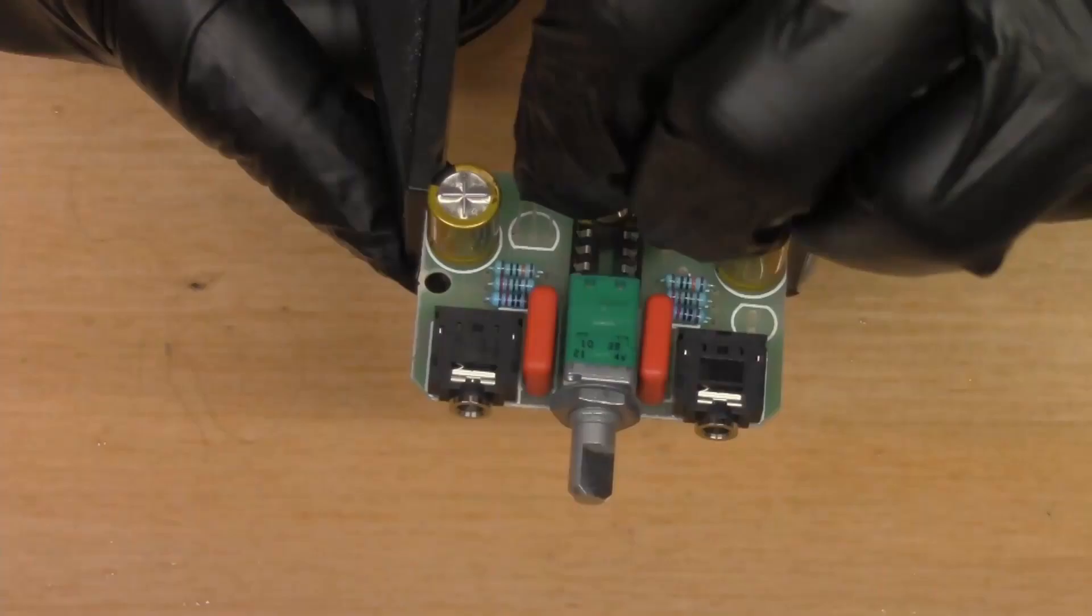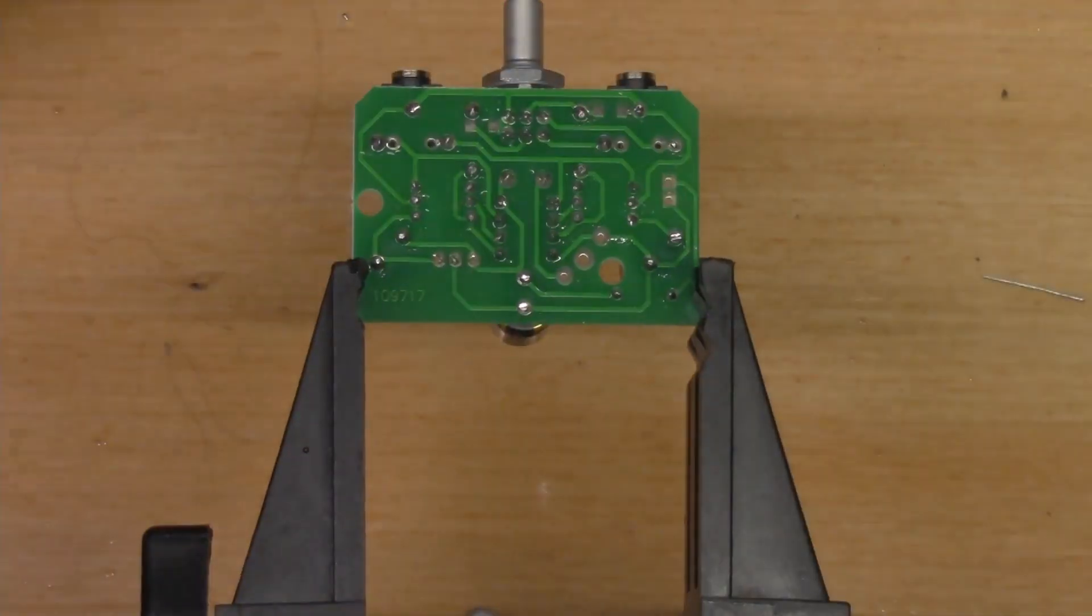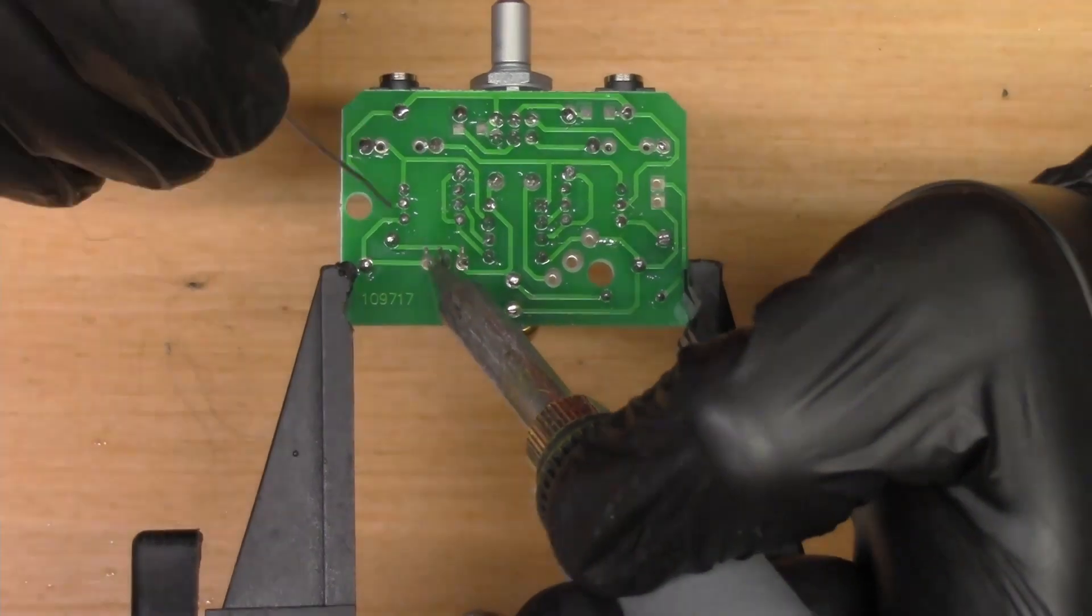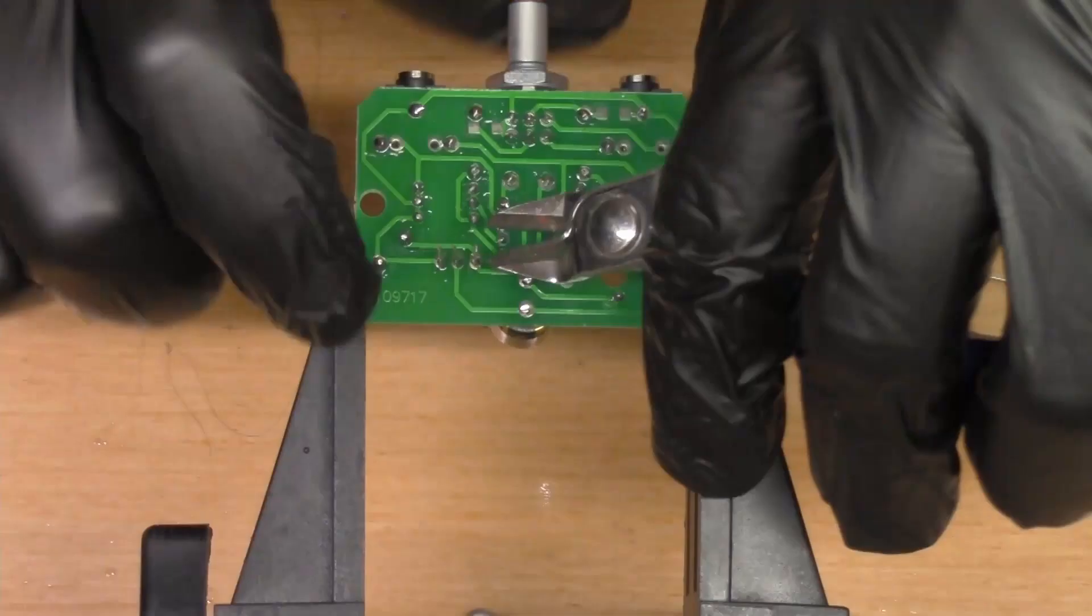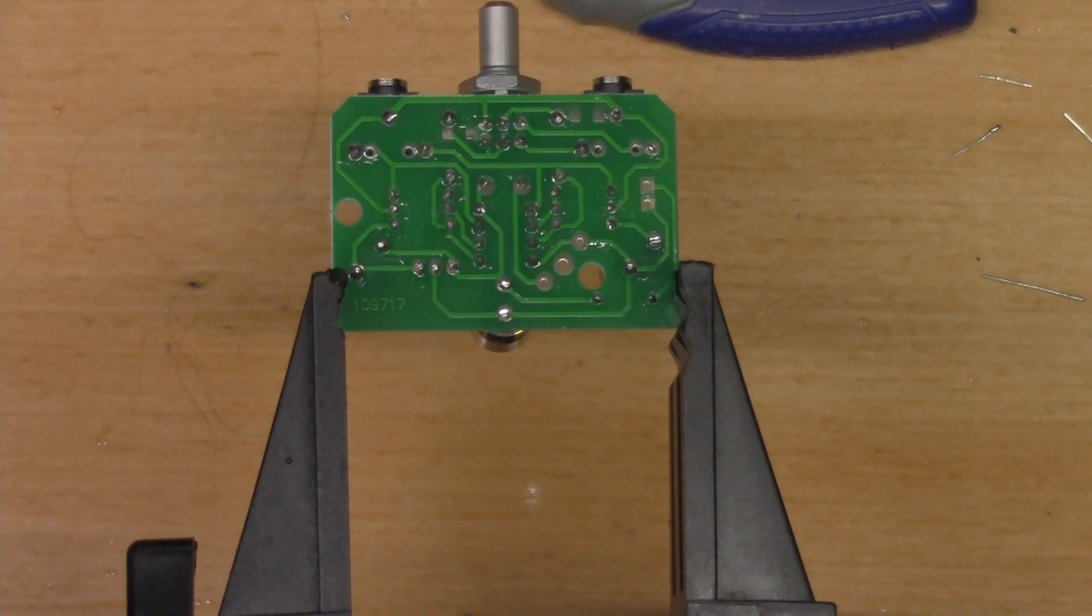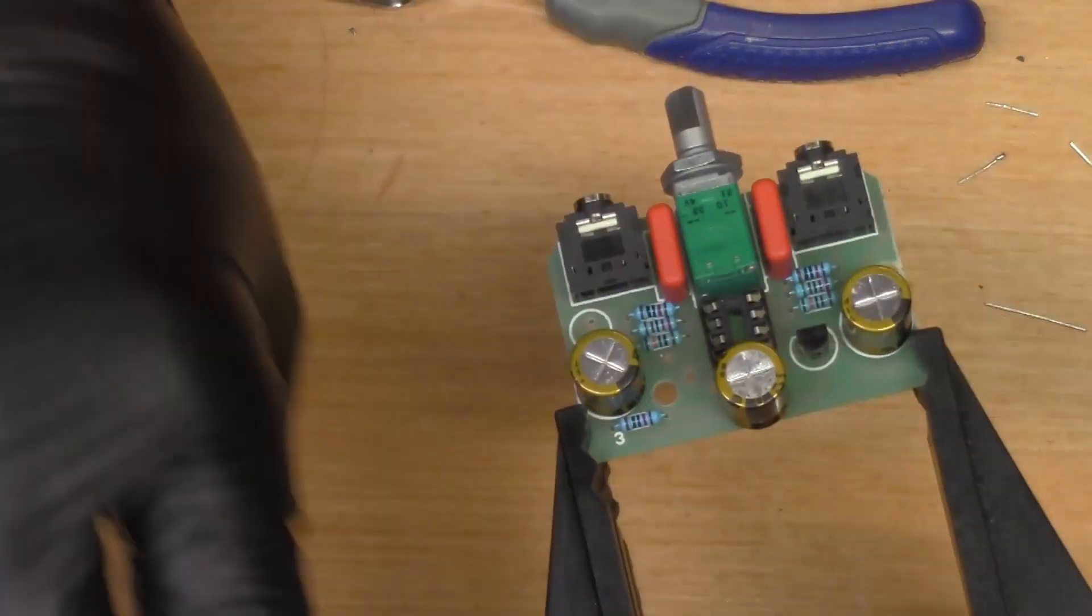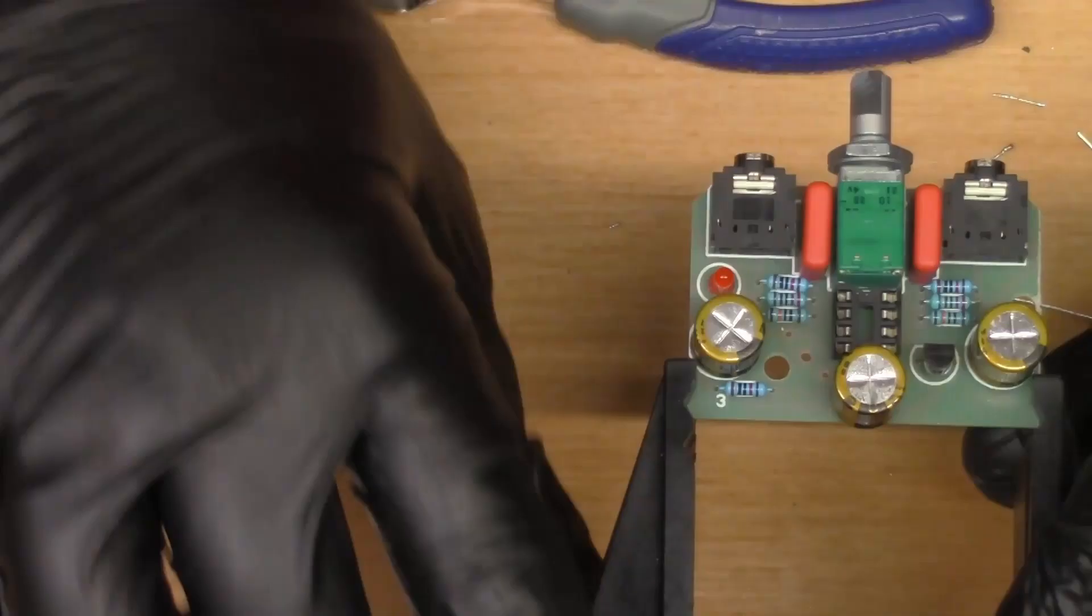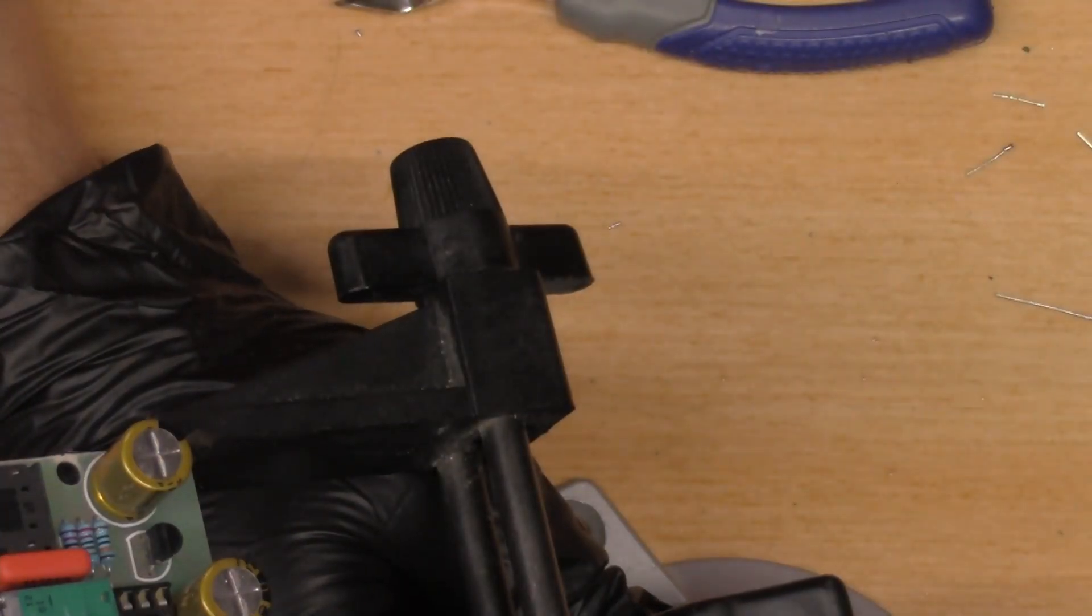So here goes the one transistor there. It kind of follows the D shape that's on the PCB for its orientation, and just three legs there to solder. At this point, we're pretty much done other than the power LED and the battery connection and actually inserting the IC.